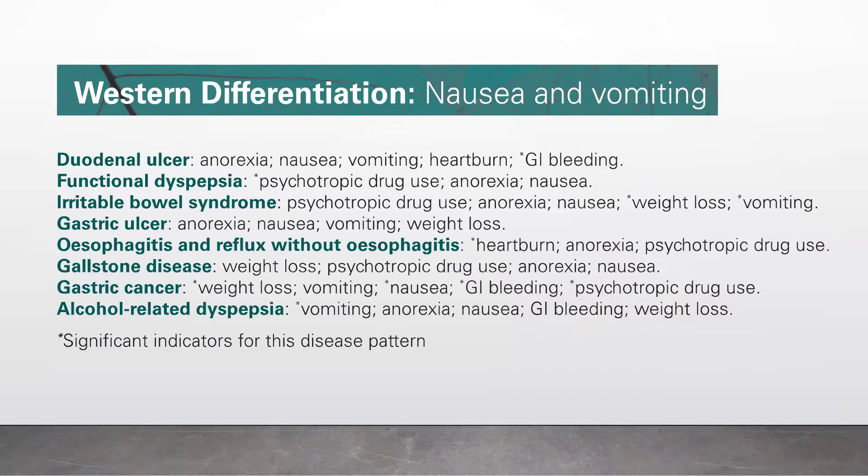Duodenal ulcer: anorexia, nausea, vomiting, heartburn, GI bleeding.